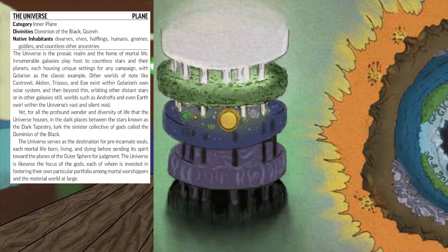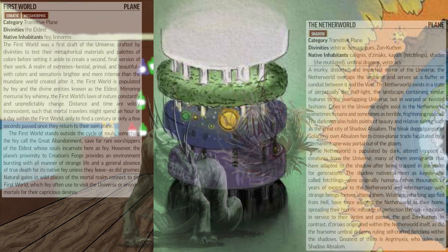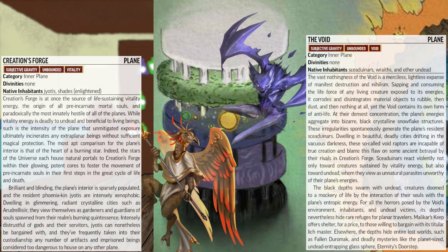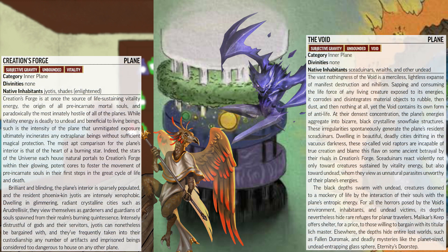The universe sits at the very core of everything. It's overlapped by the transitive planes of the First World — a first attempt at creating the universe now abandoned by the gods — and the Netherworld, a distorted and degraded mirror or shadow of the universe. These transitive planes sit close to Creation's Forge and the Void, polar opposites that provide the universe with vital and void energies.